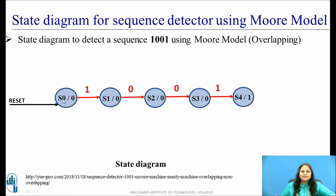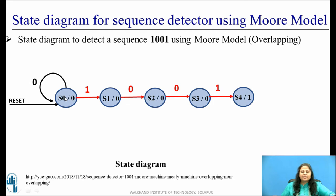S0 is waiting for the first bit, S1 is waiting for the second bit, S2 is waiting for the third bit, and S3 is waiting for the fourth bit. Now let us consider the initial state again — if the incoming bit is 0 instead of 1, it means there is no start of the sequence, so no state transition takes place. The next state is again S0; it remains in the same state when the first bit received is 0.